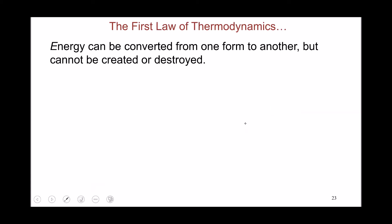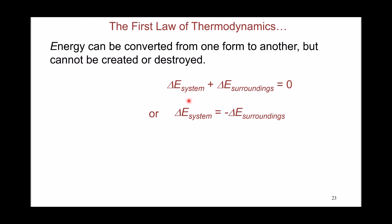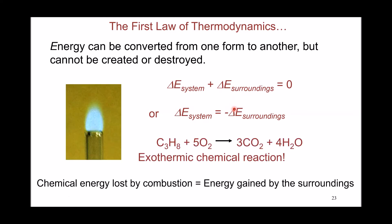That takes us to the first law of thermodynamics, which states that energy can only be converted from one form to another and cannot be created or destroyed. In mathematical form, the change in energy for any system equals the change in energy of the surroundings — any energy lost by the system must be completely gained by the surroundings and vice versa. For an exothermic reaction, the chemical energy stored in the bonds of the reactants is transferred entirely to the surroundings as heat or work.